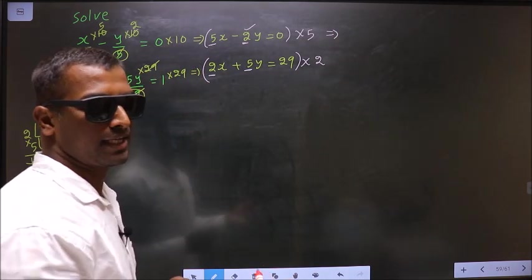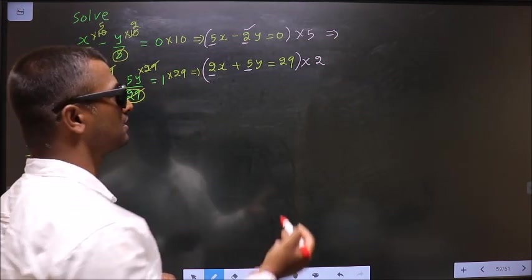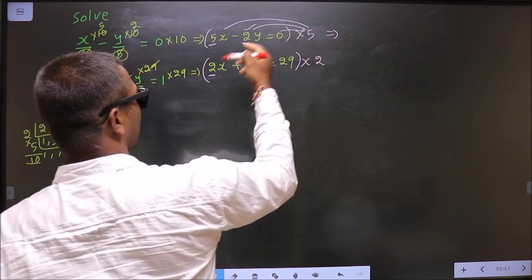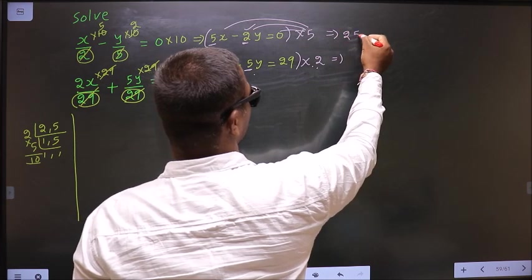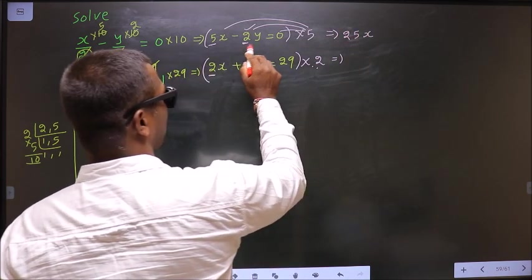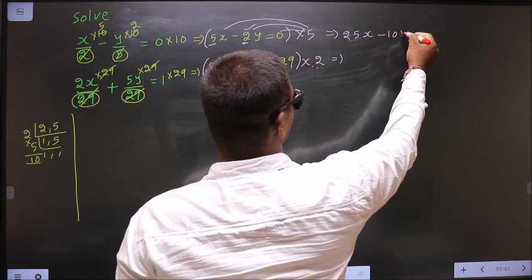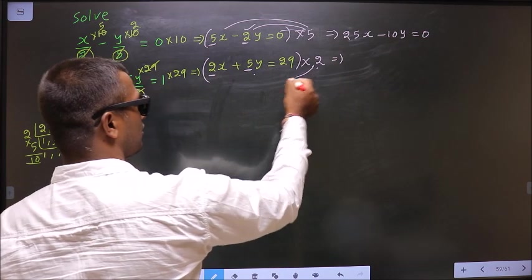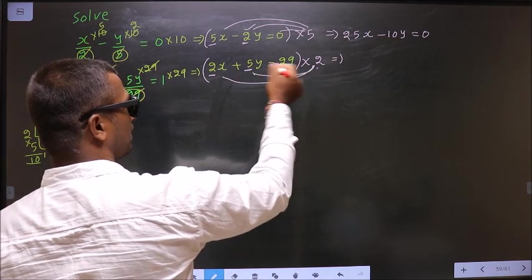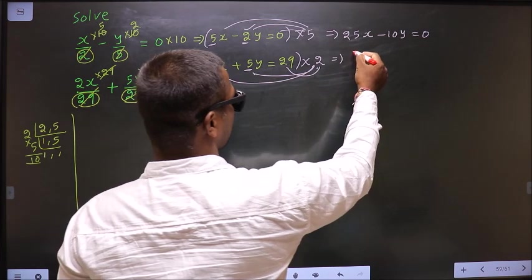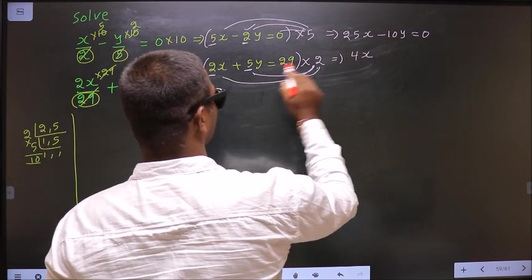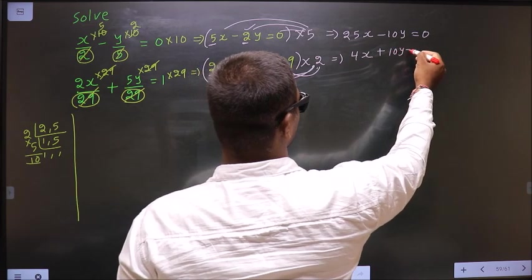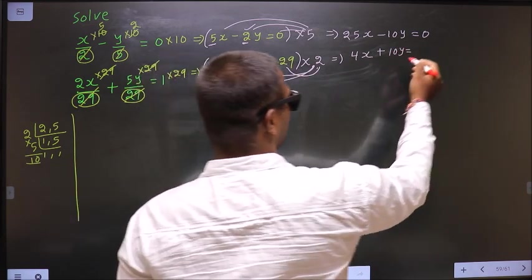Let us multiply. And how do we multiply? Multiply this to each term. So 5x into 5 is 25x, minus 2y into 5 is minus 10y, equal to 0 into anything, 0. Now here also multiply to each term. So 2x into 2 is 4x, 5y into 2 is plus 10y, equal to 29 into 2 is 58.